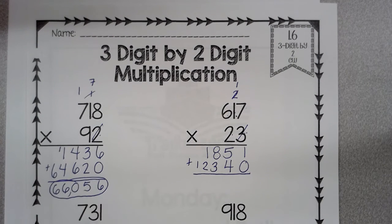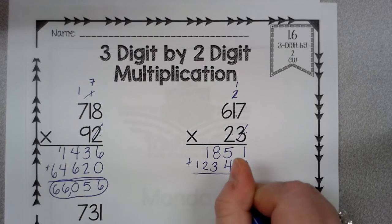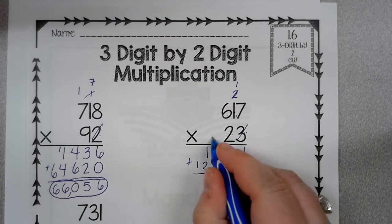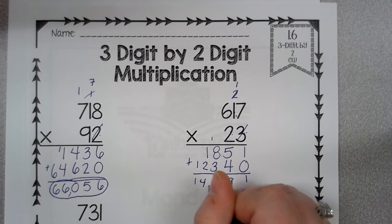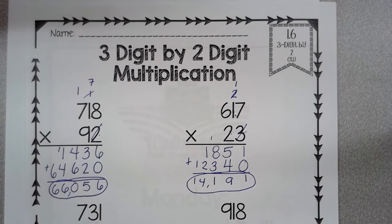Okay, so the next step I'm going to take is I'm going to take my partial products and I'm just going to add them together. So I have 1, 9, 11, 4, 1. Fourteen thousand one hundred ninety-one. I think that is correct. I'm going to double check. Yes, it is.